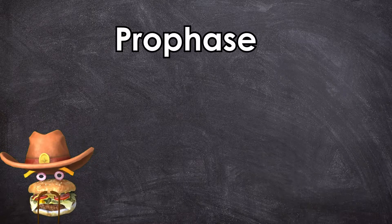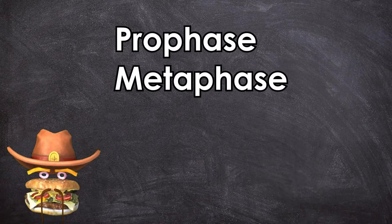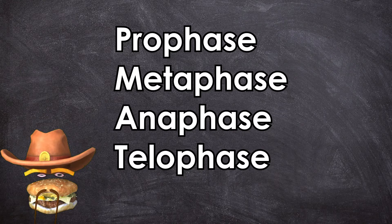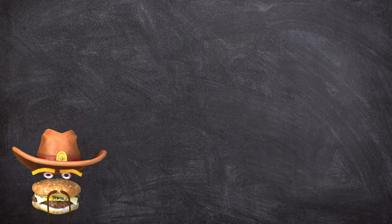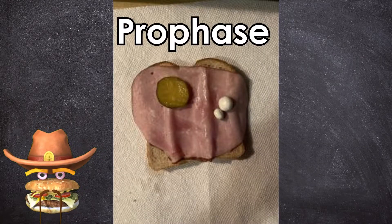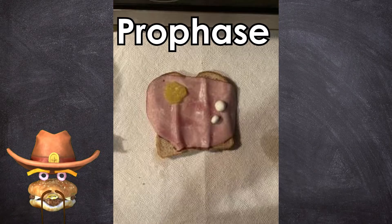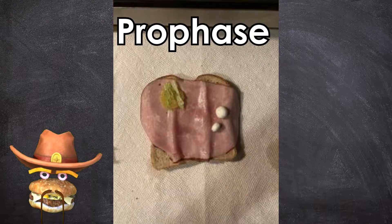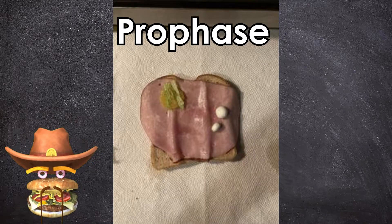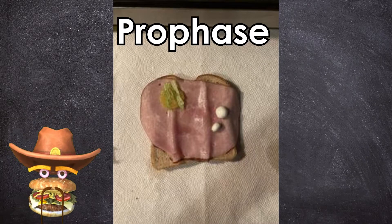Mitosis is divided into four major phases: prophase, metaphase, anaphase, and telophase. Mitosis starts with prophase, where the chromosomes start to condense, the nuclear envelope breaks down, and the mitotic spindle begins to form.